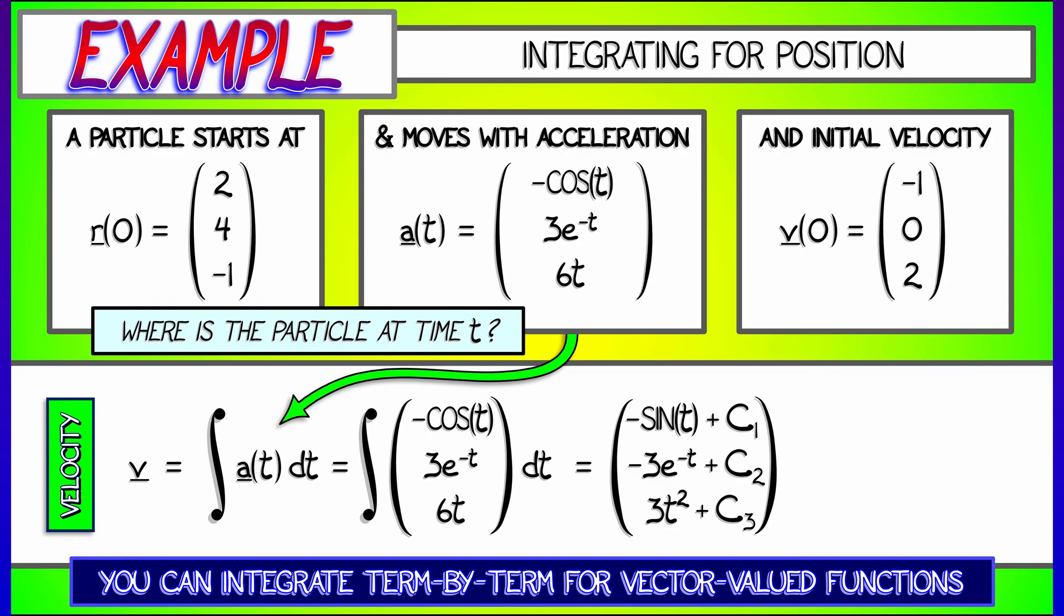How do we figure out what these constants are? We know the initial velocity v at time 0 is negative 1, 0, 2. So, plug in t equals 0 and solve for c1, c2, c3. Doing so gives us, as you can check, a final answer of velocity as negative sine t minus 1, minus 3e to the minus t plus 3, and 3t squared plus 2.